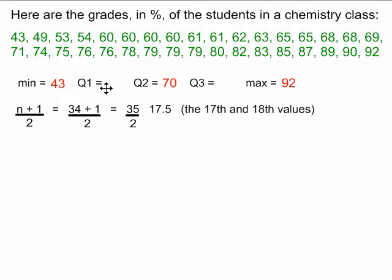Q1 is the median of the first half of the data, which is this top row of numbers here. We do the median formula again. n plus 1 over 2, in that case, is 17 plus 1 over 2, because there are 17 numbers in that top row. 17 plus 1 is 18, and 18 divided by 2 is 9.